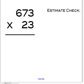So 673 times 23. 3 times 3 is 9, so you put the 9 here. 3 times 7 is 21, so you put the 1 here and carry the 2 here, because you can only put 1 here — that 2 stands for 20. Then you do 3 times 6 equals 18, plus 2 you carried, equals 20.